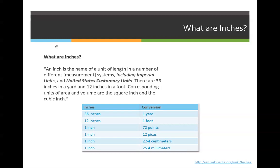Okay, so what are inches since that's what we're going to focus on? The definition that I pulled off of Wikipedia is an inch is the name of a unit of length in a number of different measurement systems, including imperial units and the United States customary units. We use United States customary units in the United States, obviously. There are 36 inches in a yard and 12 inches in a foot.